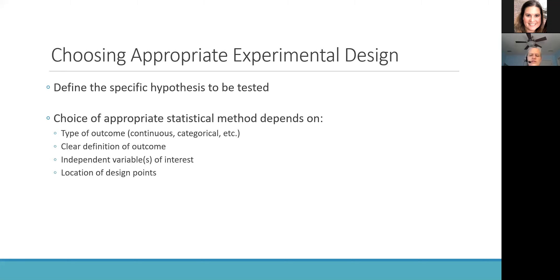We need to consider additional aspects such as variables of interest — comparing group A to group B implies there's probably a treatment variable, and we can also include things like sex as a biologic variable or other relevant biologic variables. We also need to give considerations to things like the location of design points — timing of measurements, exposure doses — and other things that go into designing your study and giving sufficient detail that a reviewer can understand what you're proposing and evaluate whether the approach is appropriate.